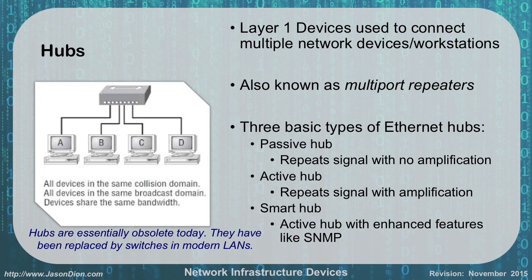All the devices were in the same collision domain, all of the devices were in the same broadcast domain, and all of the devices share the same bandwidth. If you have a 100 megabit per second hub and there are four devices, each one is going to get about 25 megabits in actual throughput.